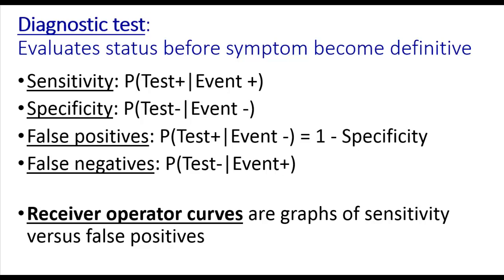What is sensitivity? That's the probability of getting a positive test given that the event has occurred. Specificity is the probability of getting a negative test when the event has not occurred — test positive when you are disease positive, test negative when you are disease negative. The flip side of both of those is false positives and false negatives. A false positive is the probability of obtaining a positive test even though you are event negative — a positive test even though you are healthy. That turns out to be the complement of specificity: one minus specificity.